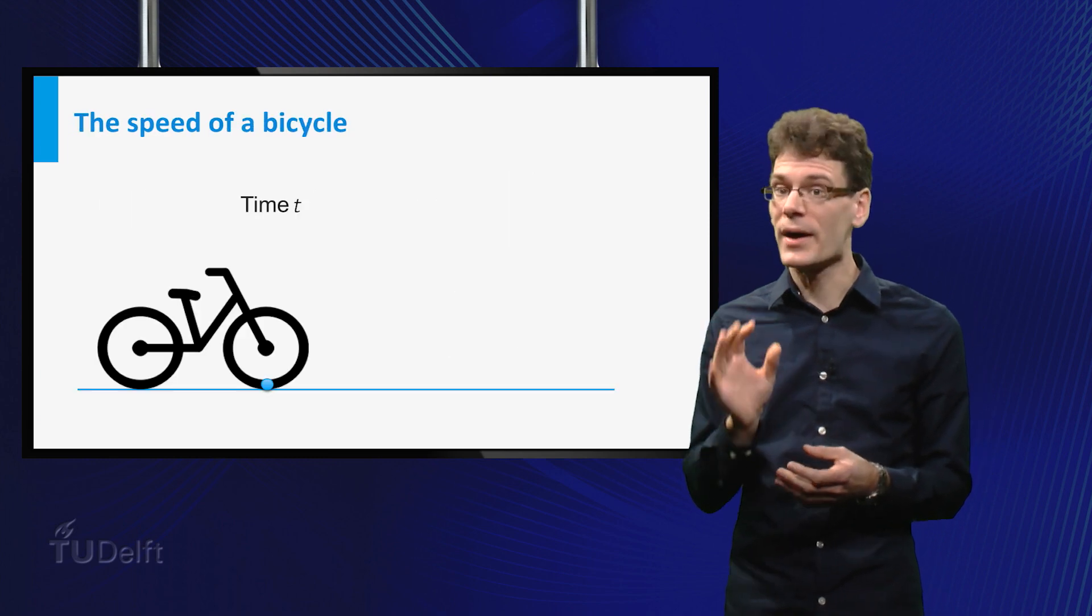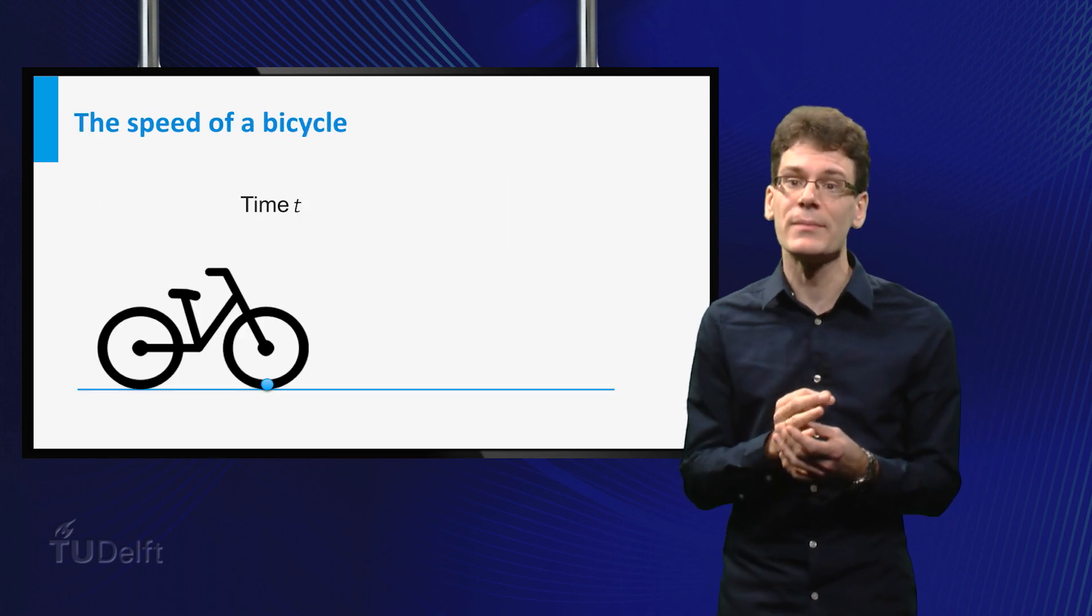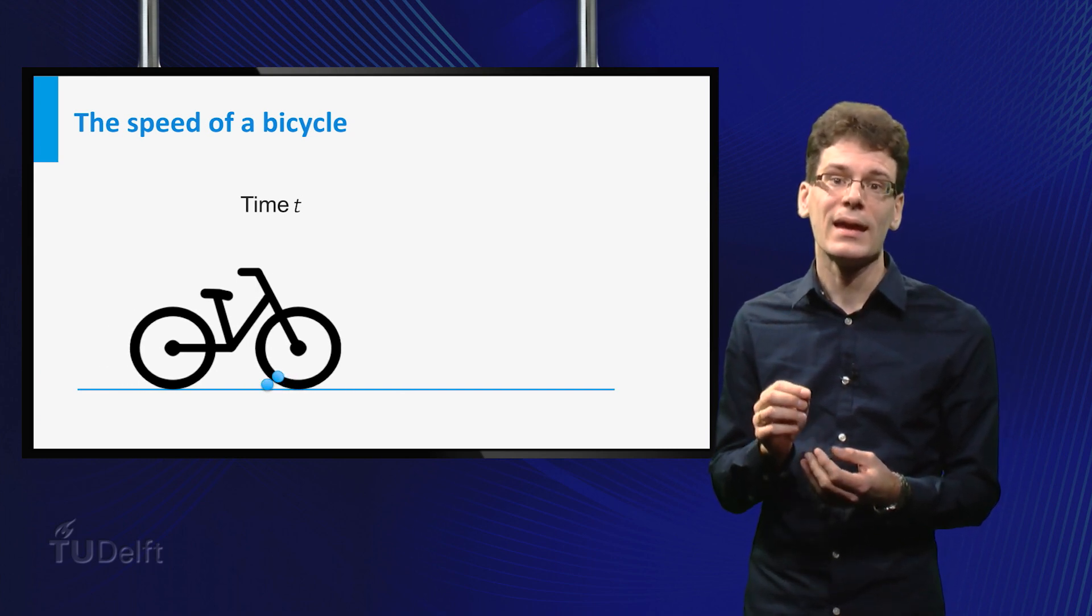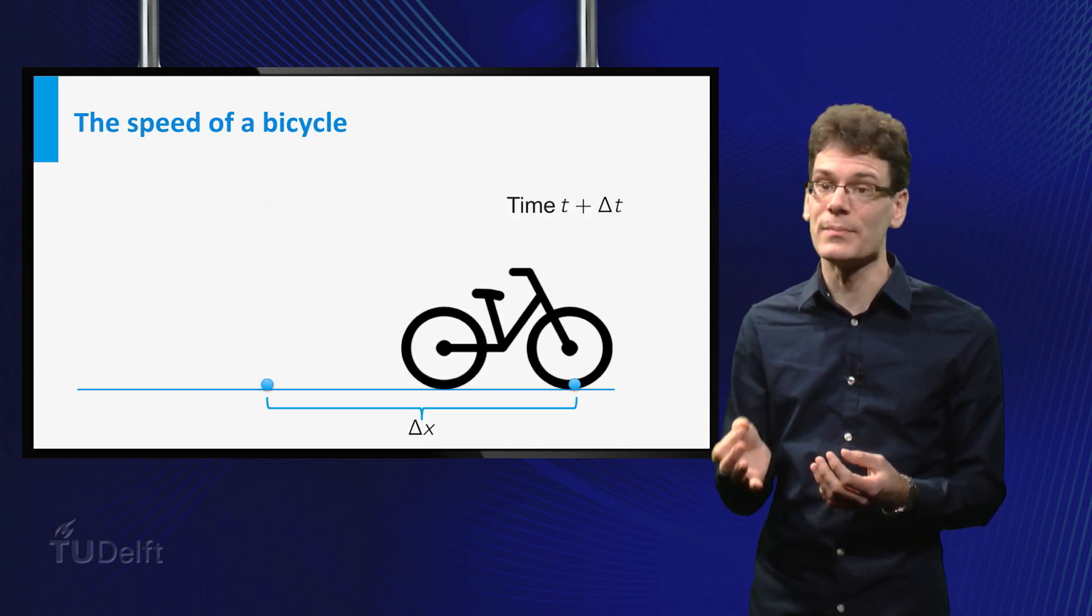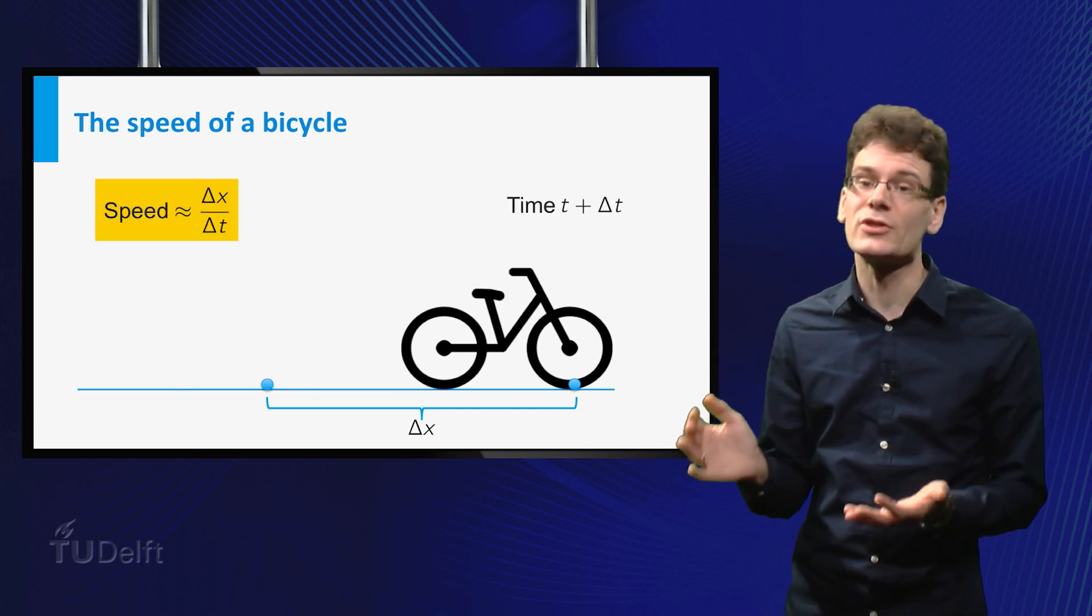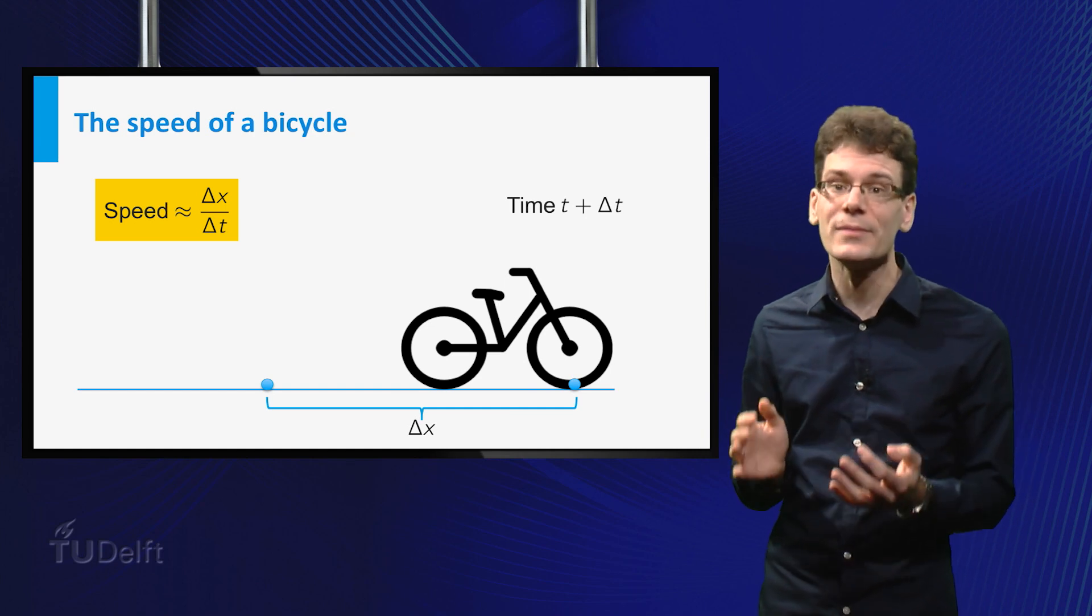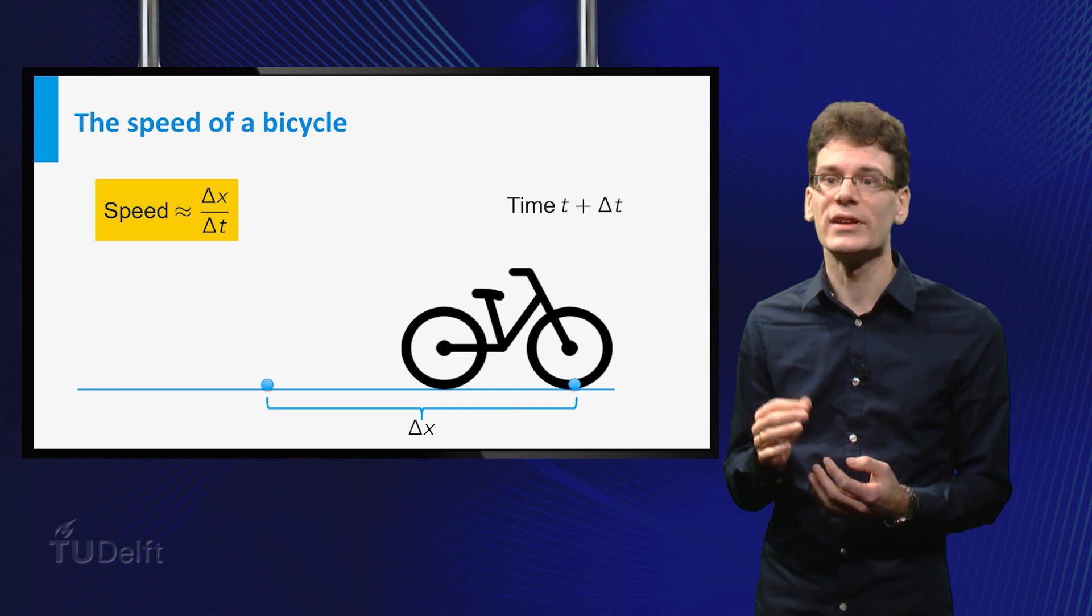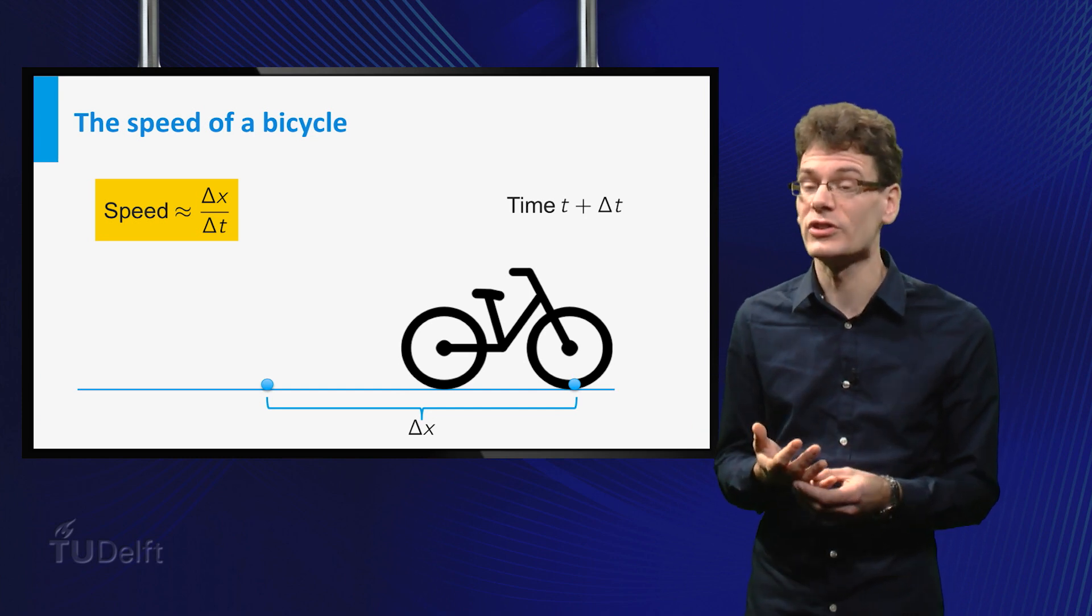For example, a bicycle computer can measure the time it takes for the wheel to make one revolution. In this case delta t is the time measured, delta x is the circumference of the wheel. The current speed is approximated by delta x divided by delta t, the difference quotient. Usually this approximation is sufficiently accurate.